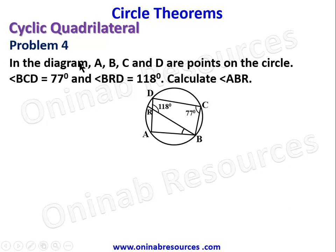Problem 4: in the diagram A, B, C, and D are points on the circle. Angle BCD is 77 degrees and angle BRD is 118 degrees; calculate angle ABR. Looking at triangle ARB, we need to find the angle at A — once we have that, we can use the exterior angle of a triangle theorem.